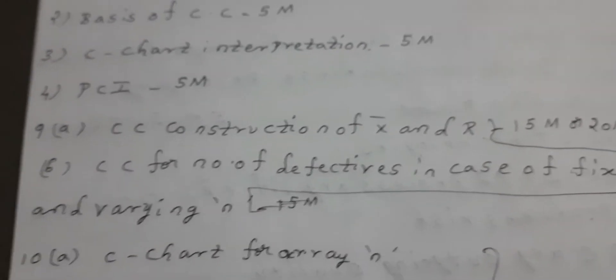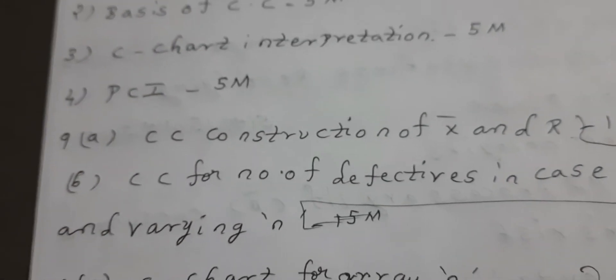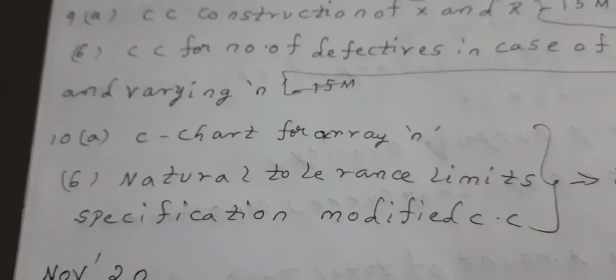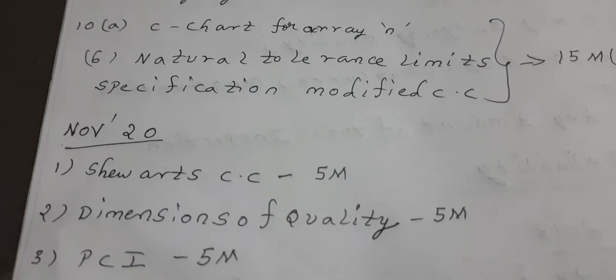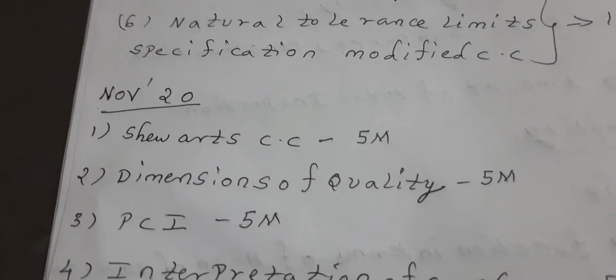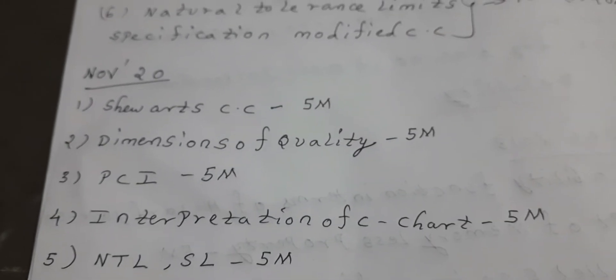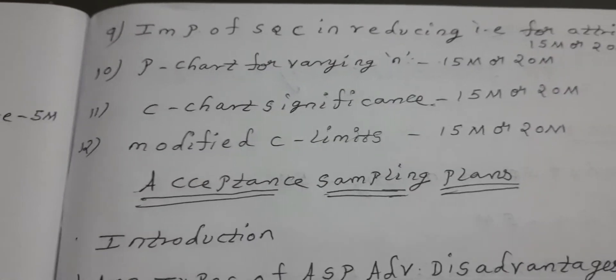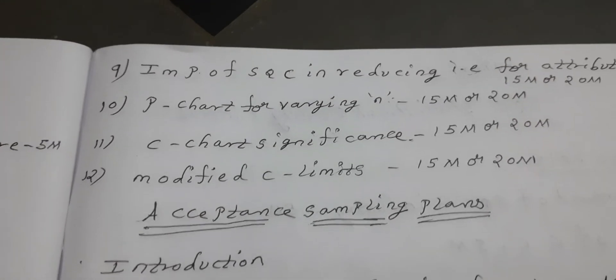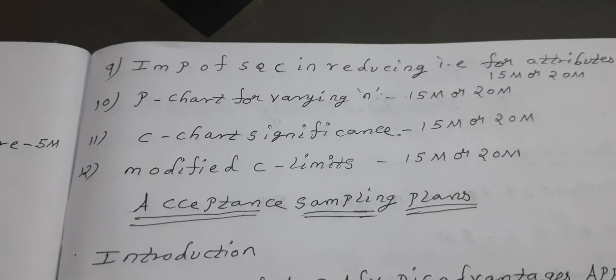Next one is 15 or 20 marks. See here, question number 10 — up to 10. This is the 2018 paper. Number 20 is 5 marks. See the next page — Importance of SQC in reducing — plus this also 15 and 20 marks.